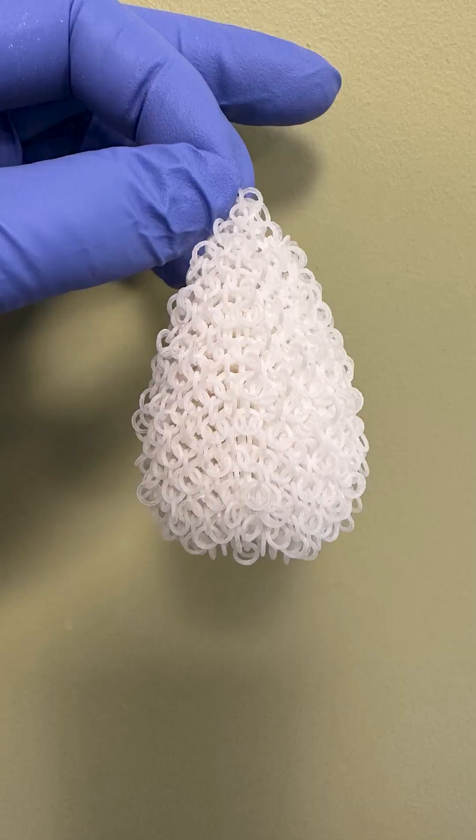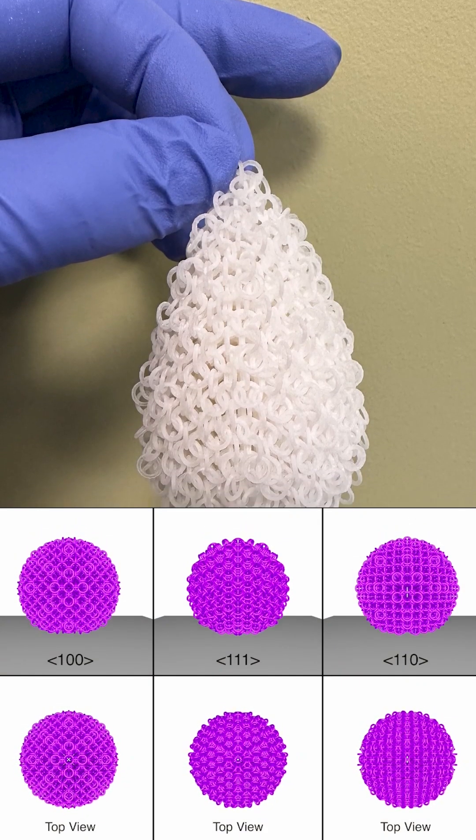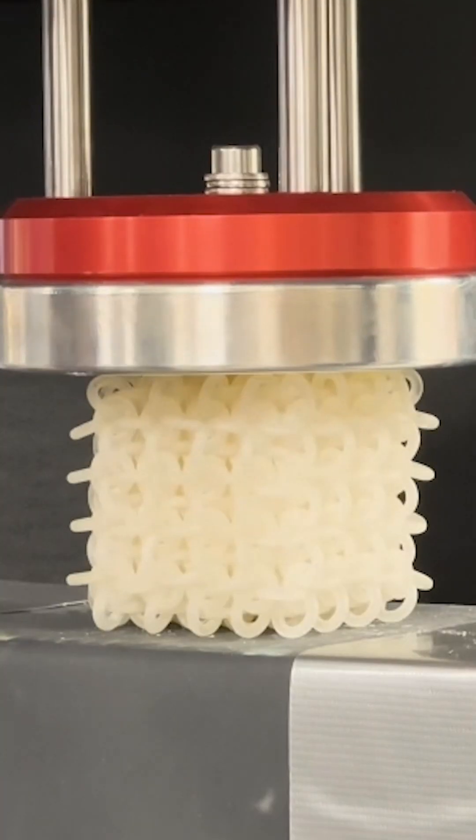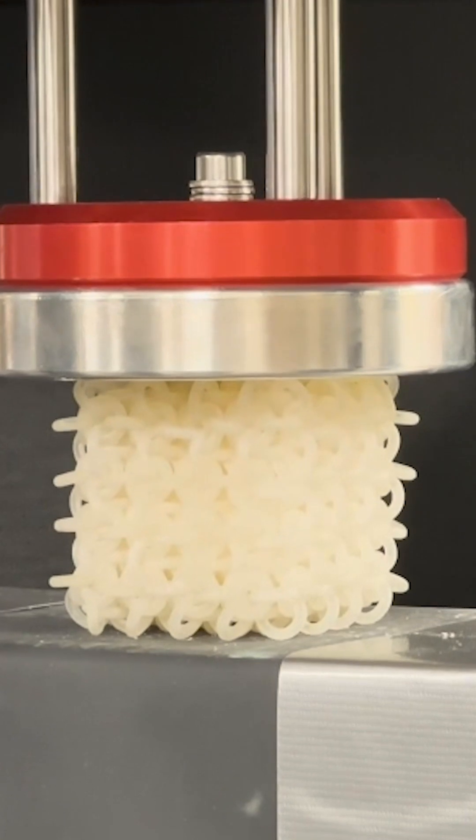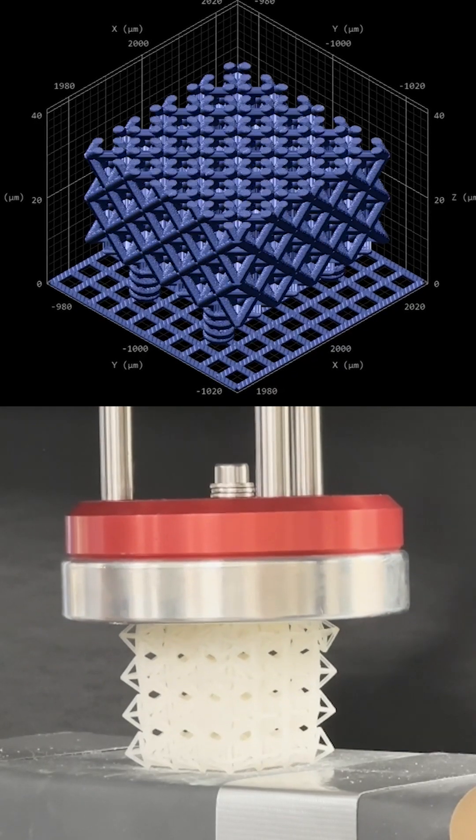They can even behave like droplets of water or honey when at rest. But PAMs become rigid when compressed, behaving like solid architected materials such as truss lattices.